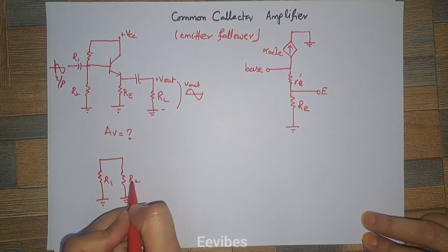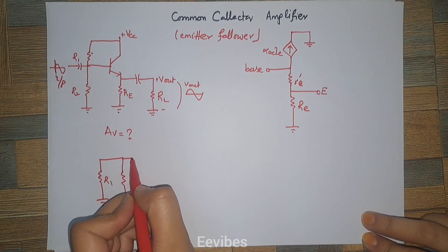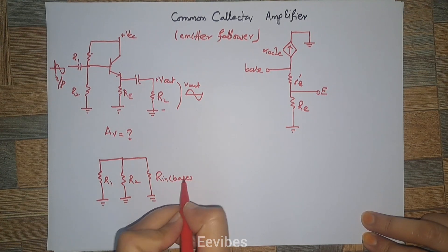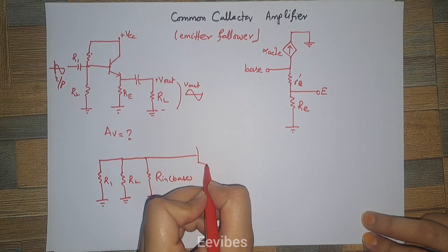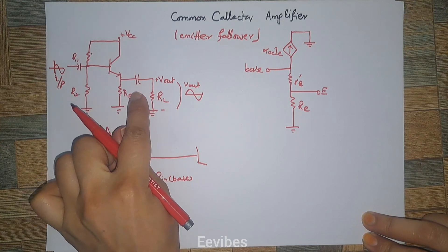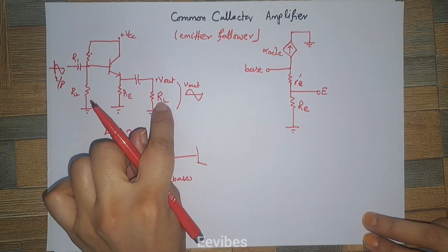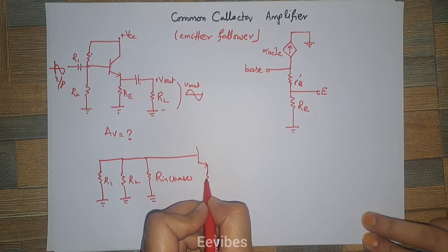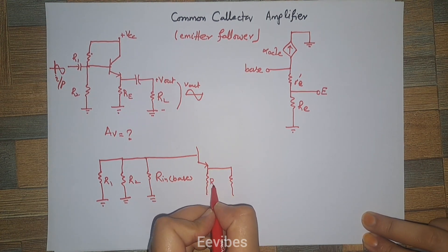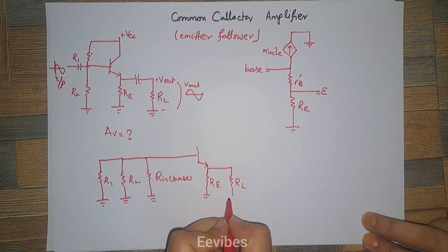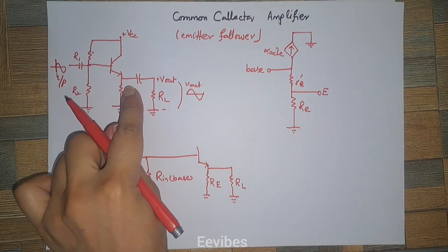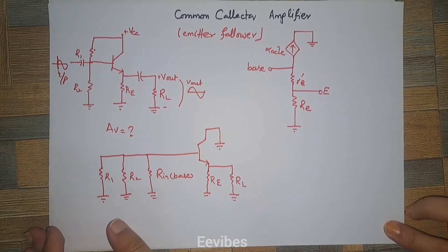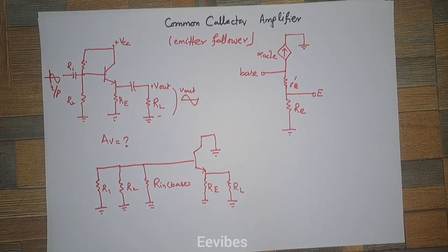R2 is drawn in parallel with R1, followed by the R-in-base resistance. At the emitter, the capacitor effectively appears as a short circuit, so RE is connected in parallel with RL. At the emitter point we can see two resistors, RE and RL, both in parallel, while the capacitor is replaced with a short circuit. The collector terminal is at AC ground. This completes the equivalent circuit.